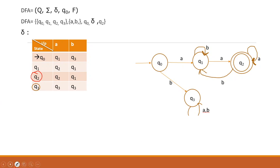Now let's check the transitions in the state input table. For Q0: on 'a' go to Q1, on 'b' go to Q3. For Q1: on 'a' go to Q2, on 'b' loop to Q1. For Q2: on 'a' stay at Q2, on 'b' go to Q1. For Q3 (trap state): on both 'a' and 'b' loop back to Q3. This completes the transition table.